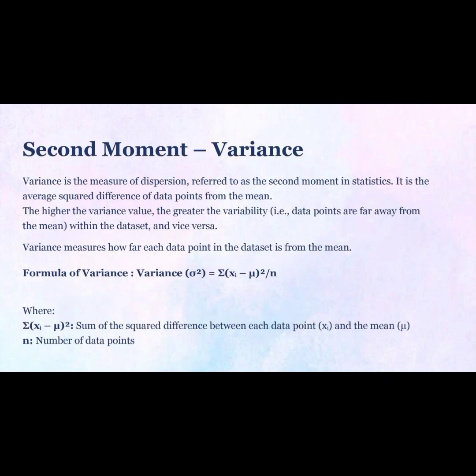Second moment: variance. Variance is the measure of dispersion, referred to as the second moment in statistics. It is the average squared difference of data points from the mean. The higher the variance value, the greater the variability — that is, data points are far away from the mean within the data set, and vice versa. Variance measures how far each data point in the data set is from the mean.